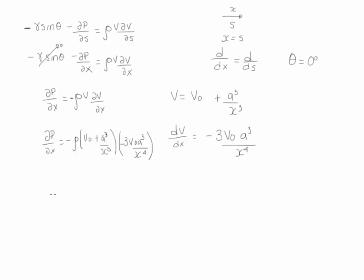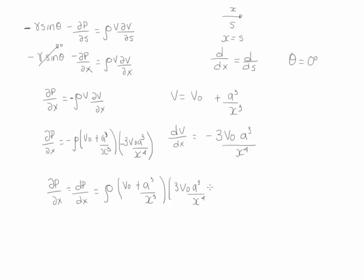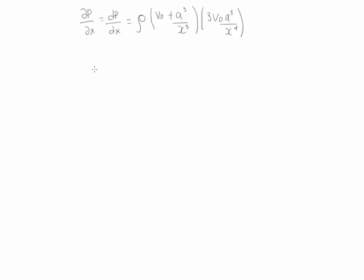At the end, we get the pressure gradient, which is now only a function of x, so we can write it in total derivatives: dP/dx equals rho times (V₀ plus a³/x³) times (3V₀ a³/x⁴). Notice that the pressure gradient is positive, meaning that the pressure is increasing as the flow moves along the streamline direction.